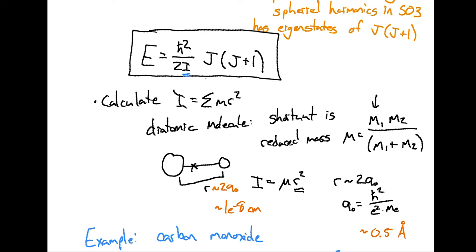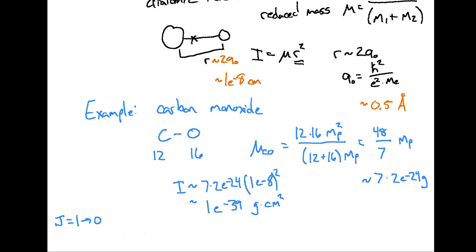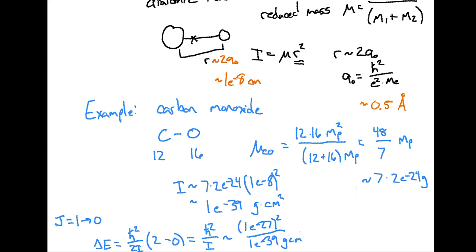Let's look at a specific transition: j=1 to j=0 in carbon monoxide, so Δj=1. The change in energy is the energy of the j=1 state — ℏ²/(2I) × j(j+1) = ℏ²/(2I) × 2 — minus the energy of the j=0 state, which is 0. So ΔE = ℏ²/I ≈ (1×10⁻²⁷ erg·s²) / (1×10⁻³⁹ g·cm²) ≈ 1×10⁻¹⁵ ergs. Setting this equal to hν and dividing out h = 6×10⁻²⁷, we get a frequency of about 100 GHz, or 1×10¹¹ Hz.